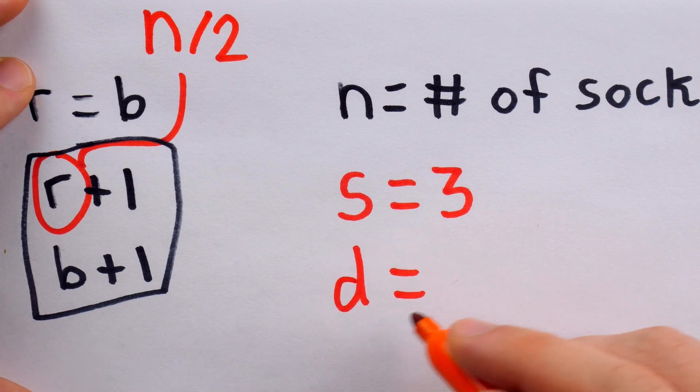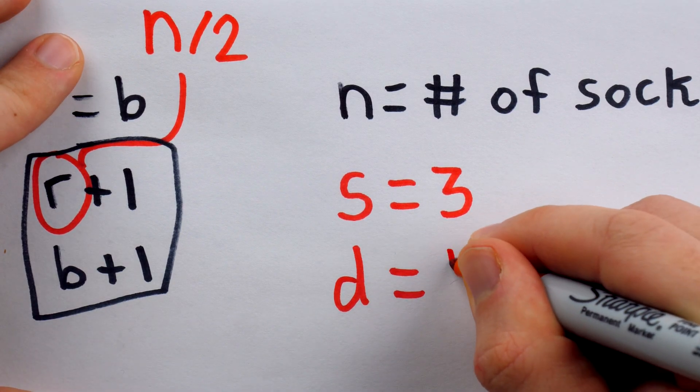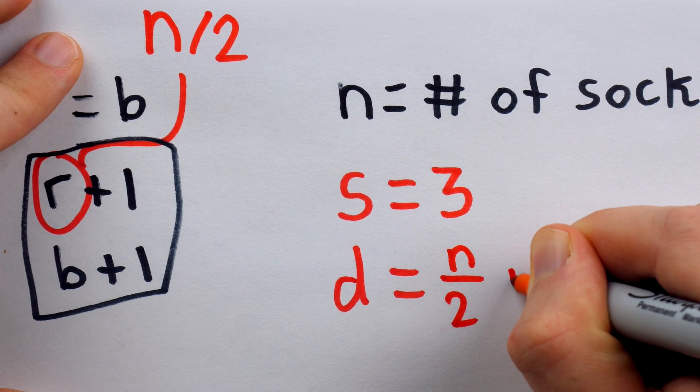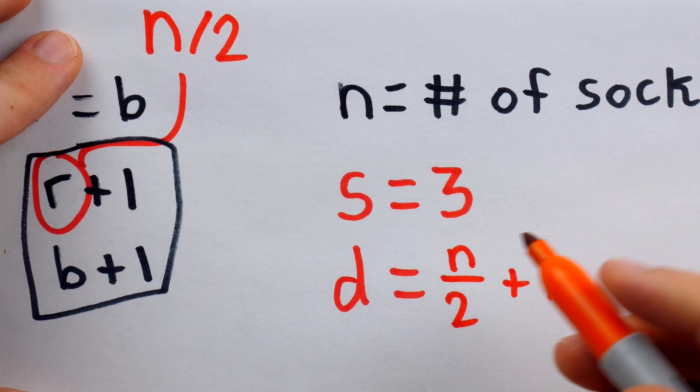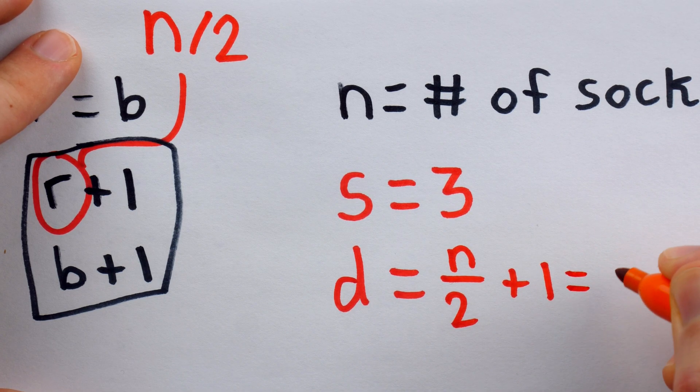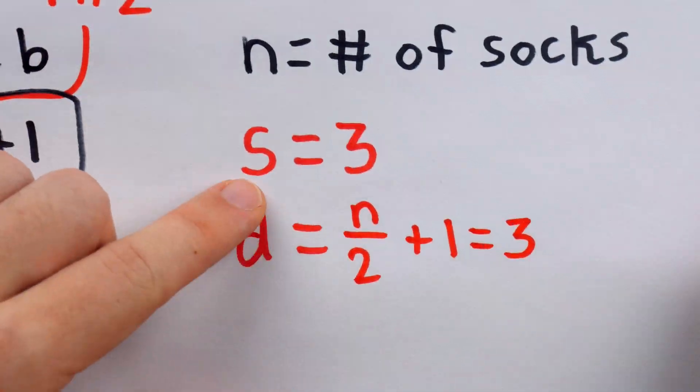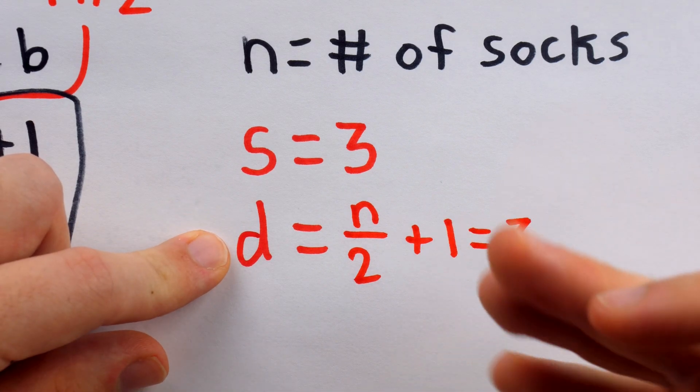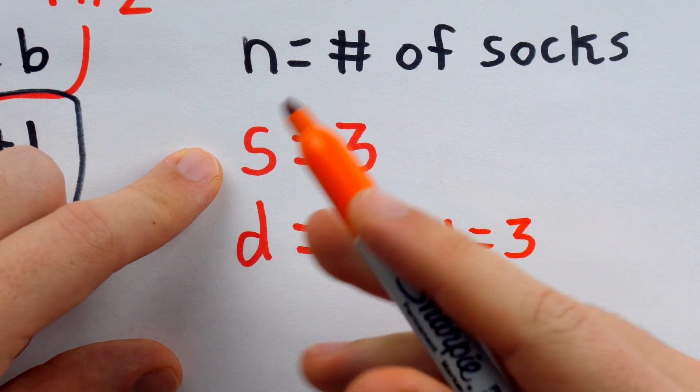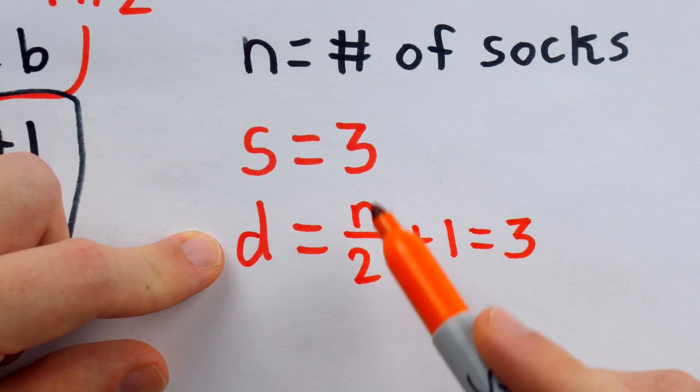Hence, R plus 1, which we know is D, is the same as half of N plus 1. And, like we said, this has to equal 3, because we were told that S is the same as D. The minimum number to guarantee a matched pair is the same as the minimum number to guarantee a mixed pair.